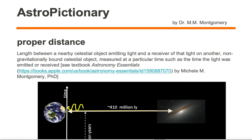Proper distance is the length between a nearby celestial object emitting light and a receiver of that light on another non-gravitationally bound celestial object, measured at a particular time such as the time the light was emitted or received.